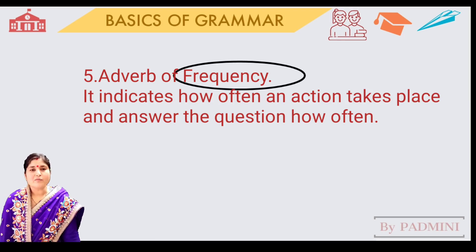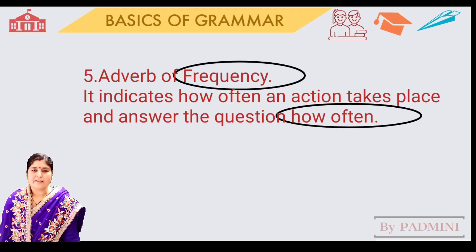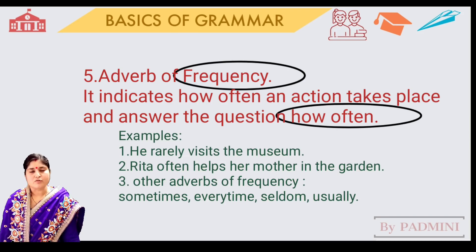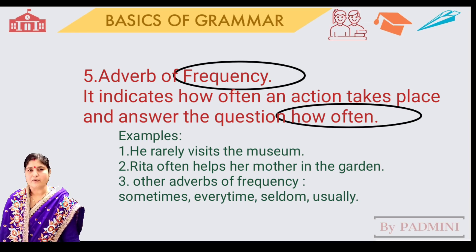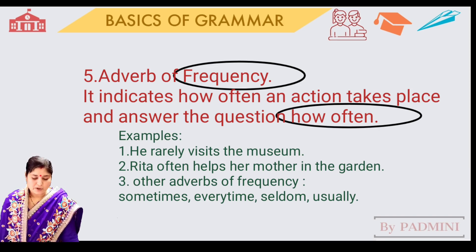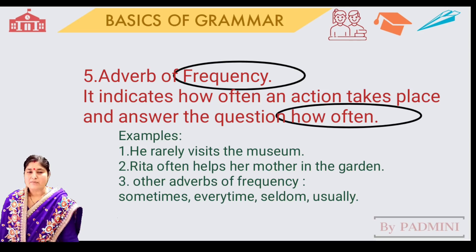Number five: adverbs of frequency. Adverbs of frequency indicate how often an action has been done. For example, 'he rarely visits the museum' and 'I seldom go to my uncle's house.' Rarely and seldom tell us how often the action has been done. Other examples include sometimes, every time, usually.